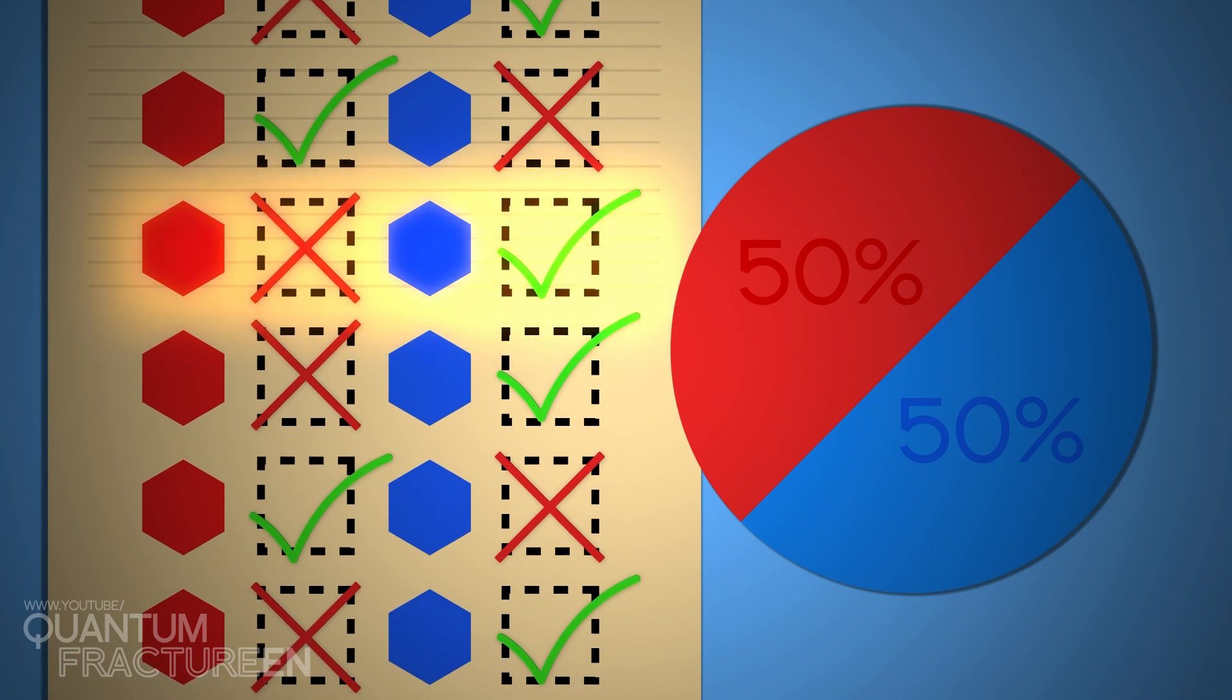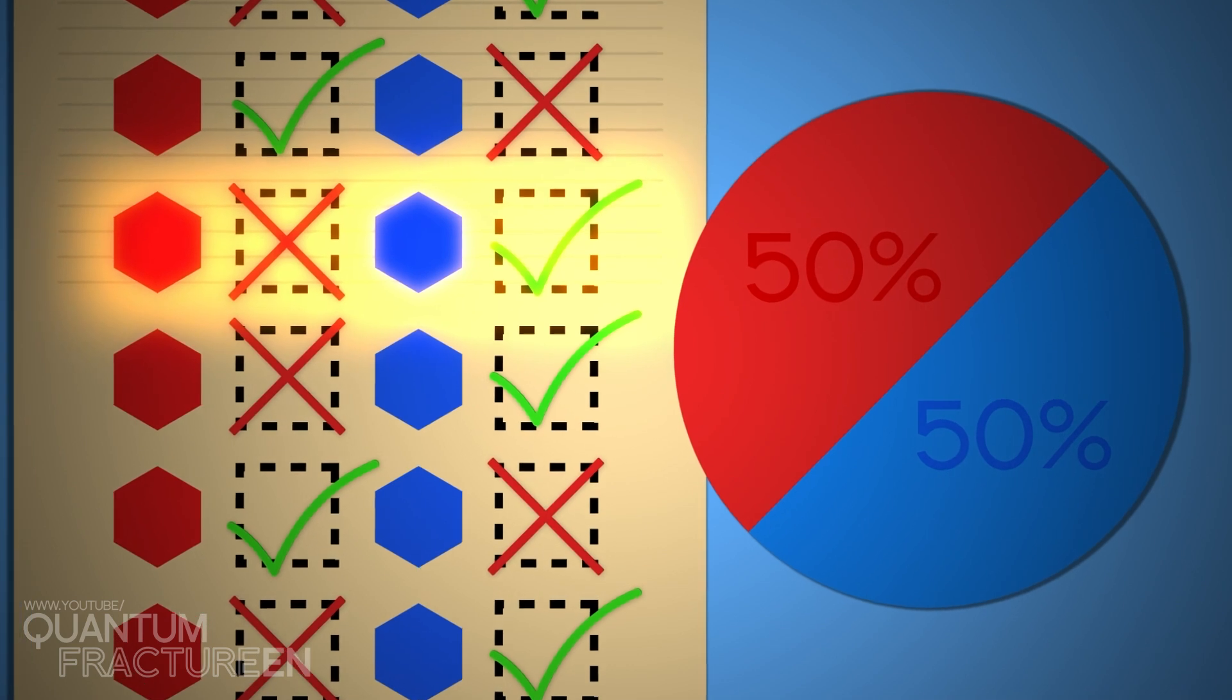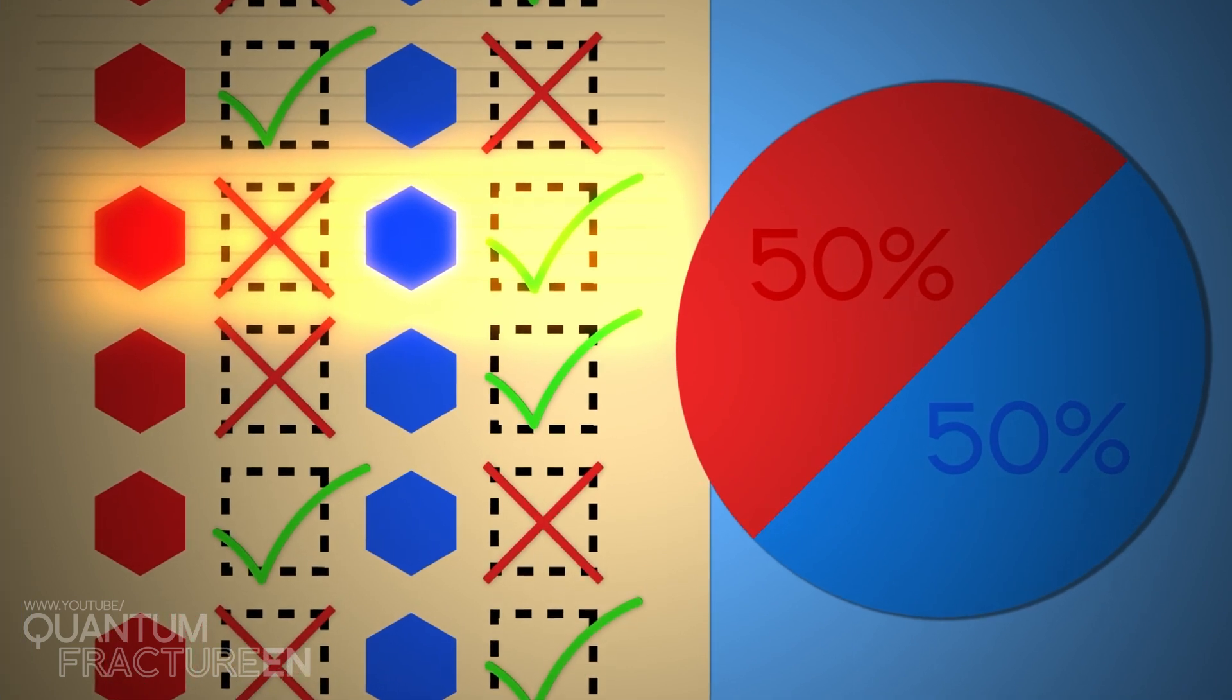And of course, when the atom was in one box, the other box was always empty. Because an atom can't be in two boxes at once… or can it?